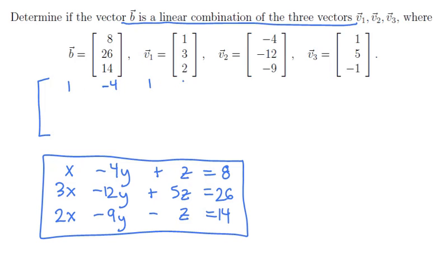Along the rows, [1, -4, 1, 8]. Along the second row, [3, -12, 5, 26]. And along the third row, [2, -9, -1, 14]. And now let's row reduce this.